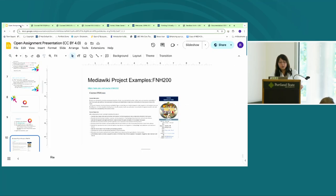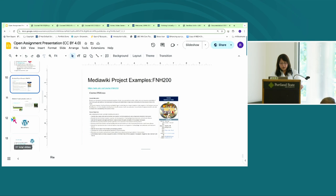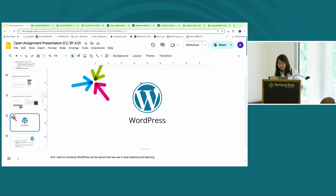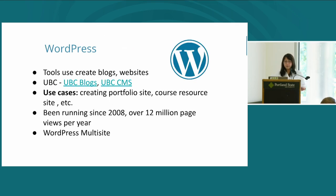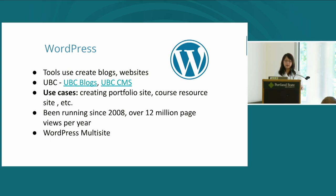Now moving on to WordPress. WordPress is a tool used to create blogs and websites. At UBC, we have two main instances: UBC Blogs, used to create portfolio sites or course resources, and UBC CMS, used mainly for departmental websites. It has been running since 2008, has over 12 million page views per year, uses WordPress multi-site technology, and is hosted on Azure cloud services.